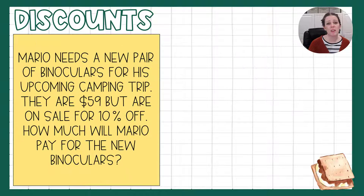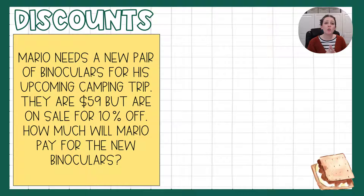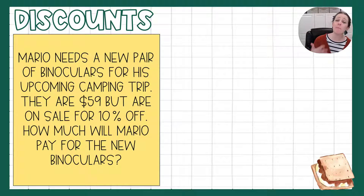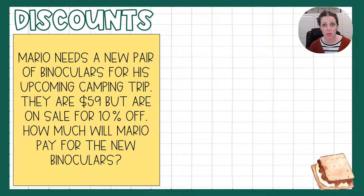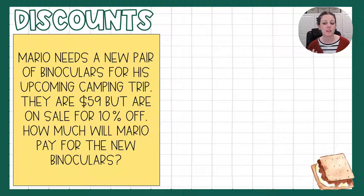But here's where it gets a little bit different. Mario needs a new pair of binoculars for his upcoming camping trip. They are $59, but they are on sale for 10% off. How much will Mario pay for the new binoculars? This is where it gets a little bit different than when we find sales tax and tip.